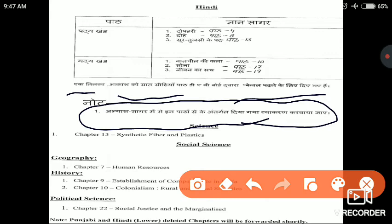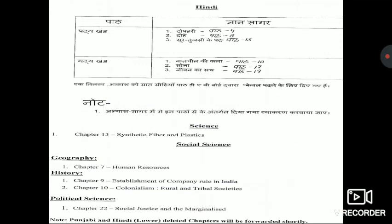In History, you have two chapters that are deleted. That is Chapter 9, Establishment of Company Rule in India, and Chapter 10, Colonization — that is Role in Tribal Societies.